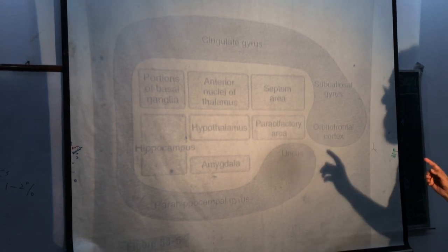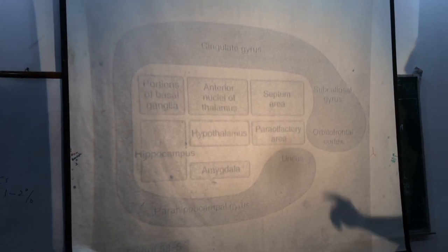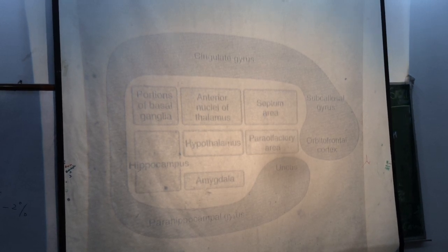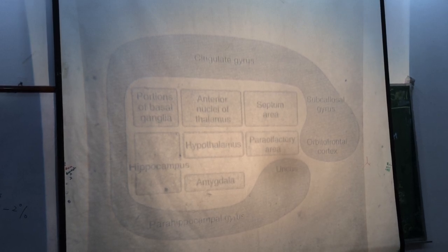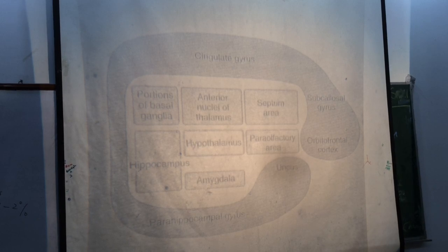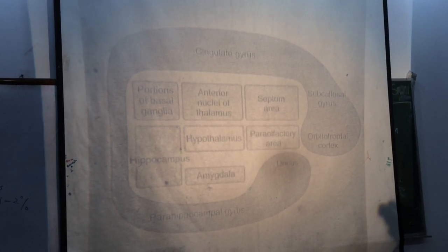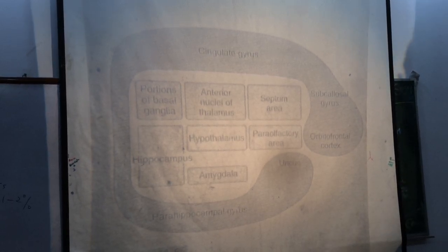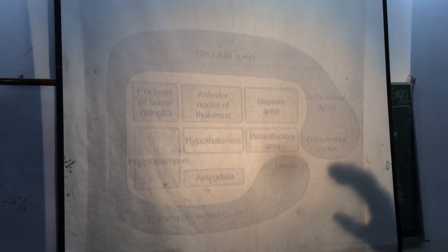The most important functional part of the limbic system is the hypothalamus. It is located below the hypothalamic sulcus and forms the antero-inferior wall and floor of the third ventricle. In the hypothalamus there are four areas containing important nuclei.